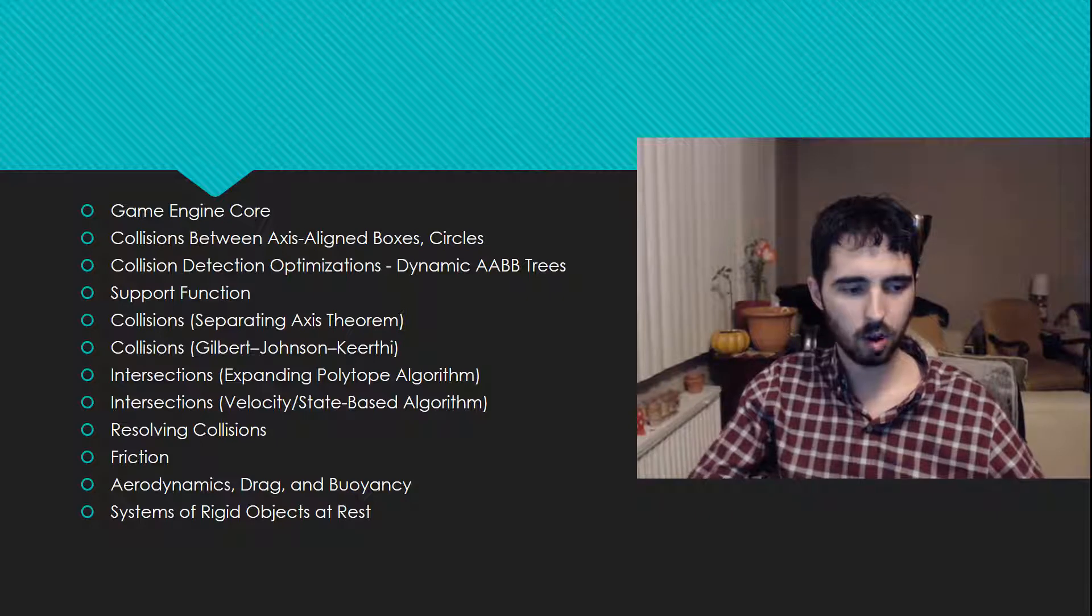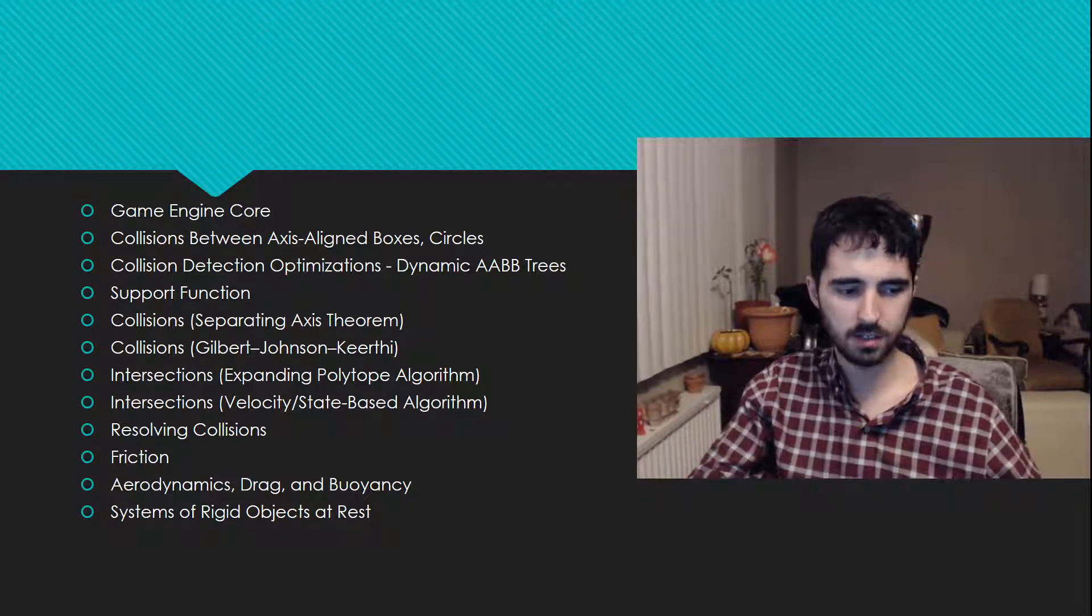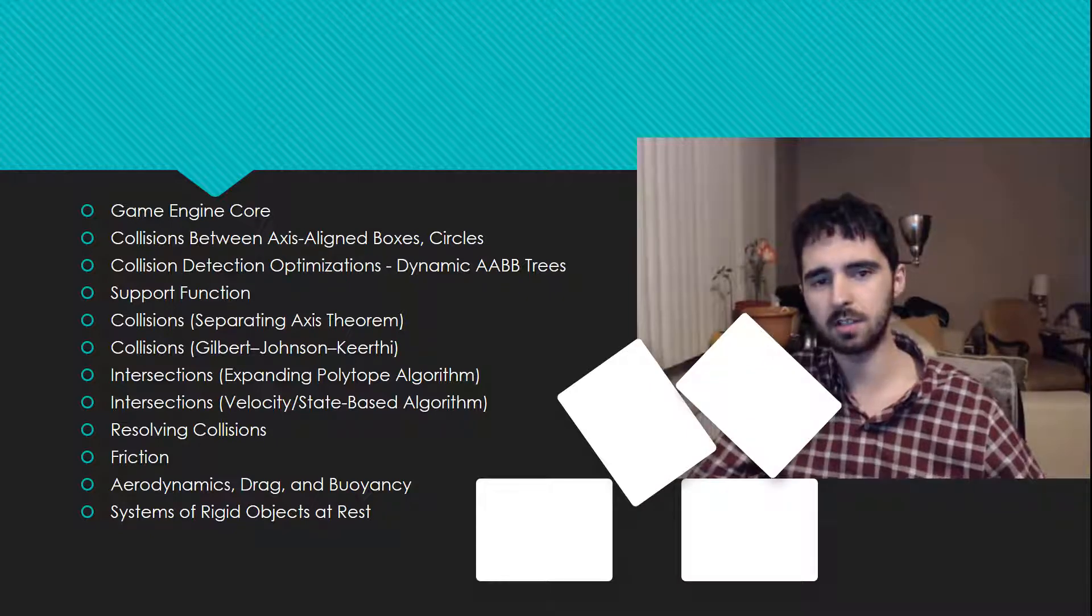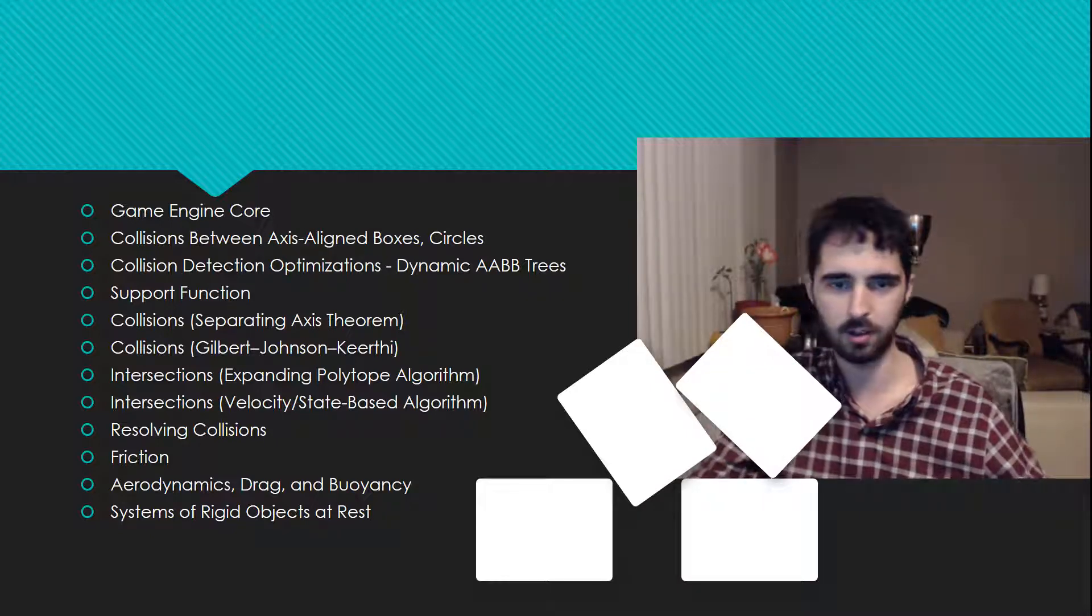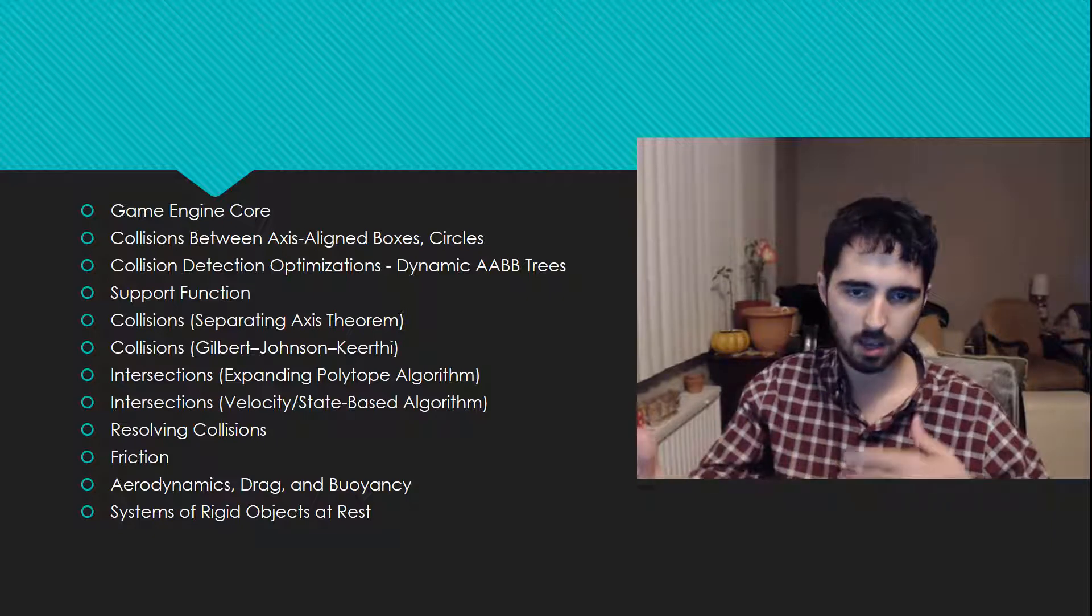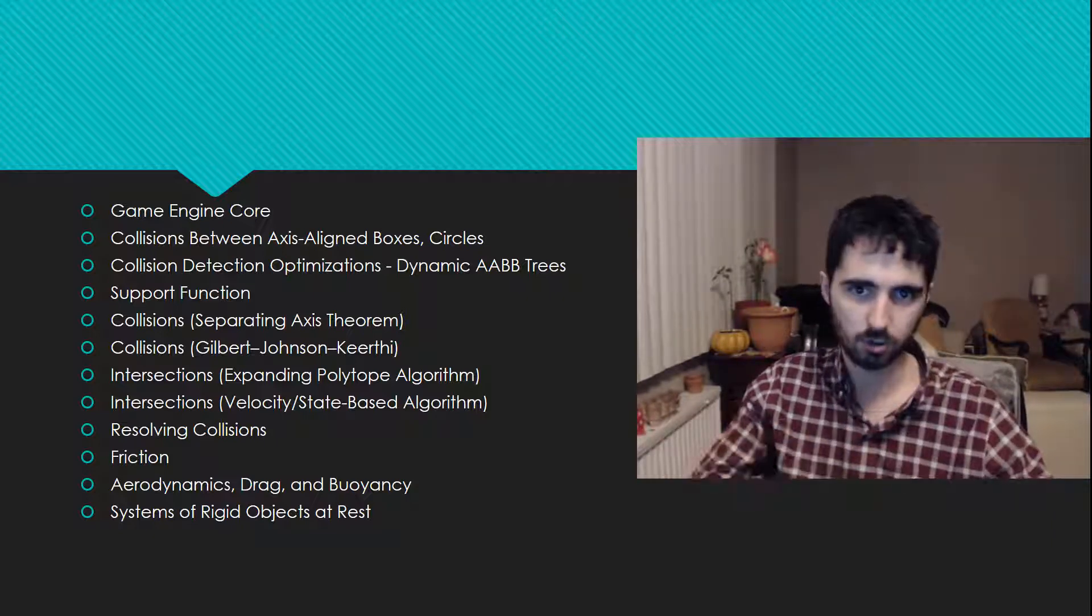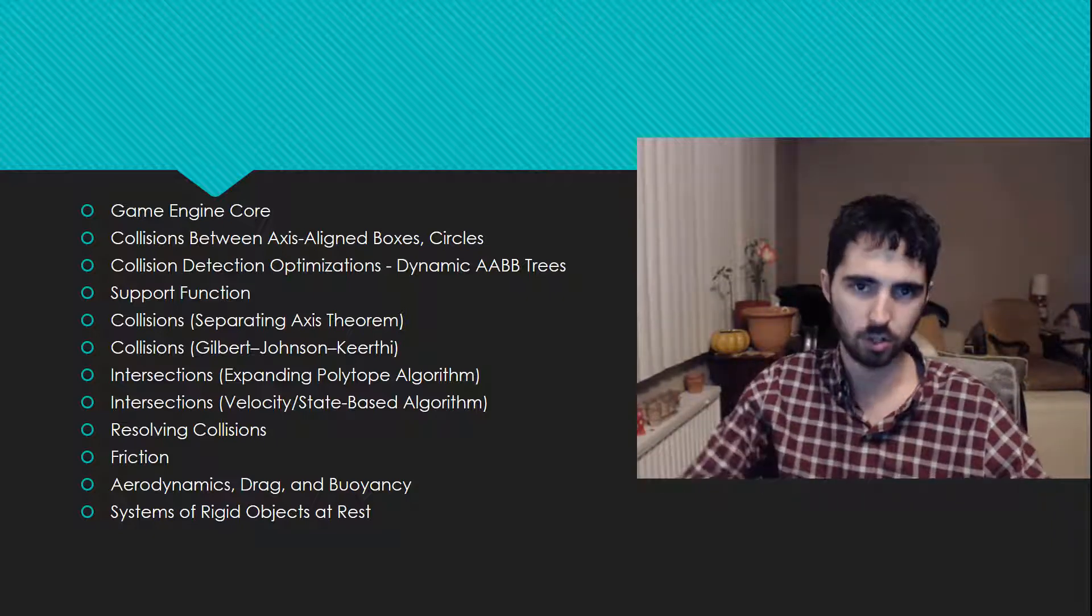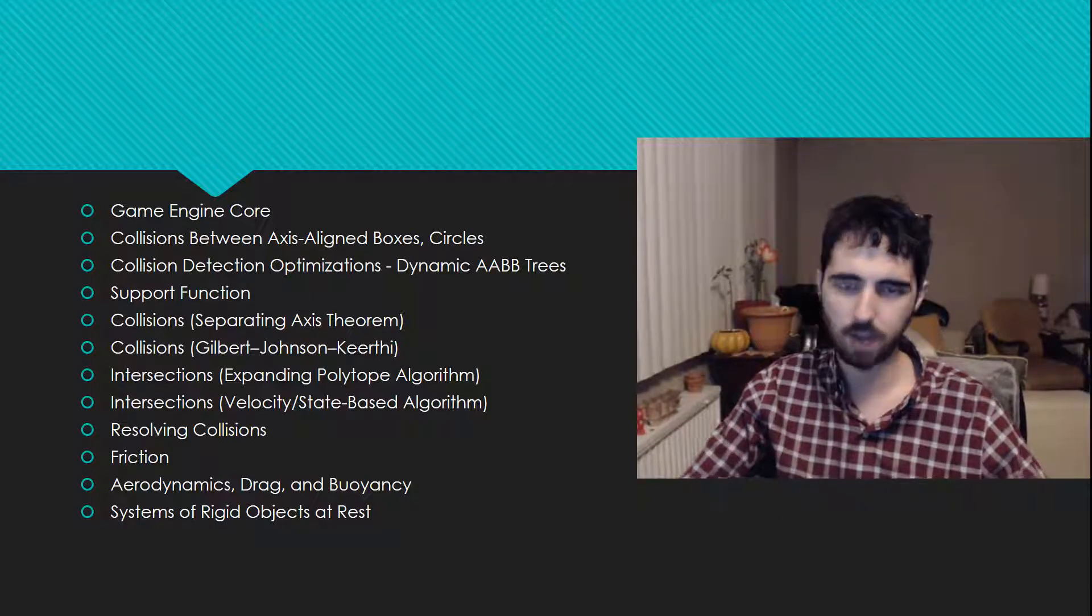I'll go on to talk about another optimization, which is talking about systems of rigid objects at rest. This is like dealing with objects that are stacked on top of each other in little islands, and you want to optimize the collision detection algorithm so that you don't have to do a million different collision detections every single physics update.